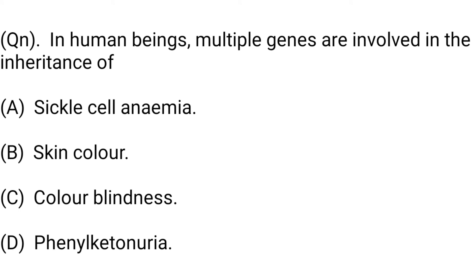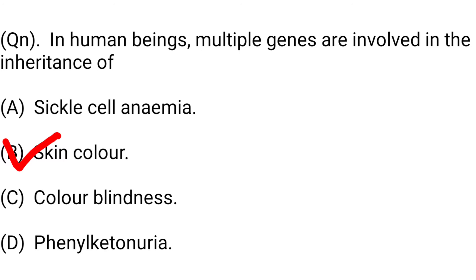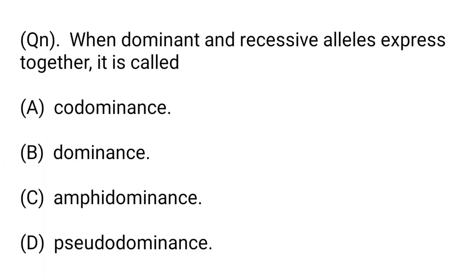Next question: In human beings, multiple genes are involved in the inheritance of: Option A: sickle cell anemia. Option B: skin color. Option C: colorblindness. Option D: phenylketonuria. Skin color is an example of multiple genic inheritance. Hence, option B, skin color, is the right answer.